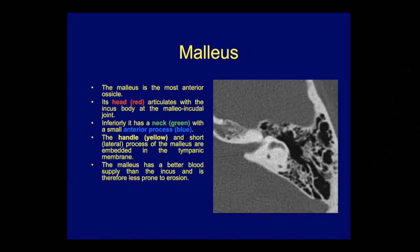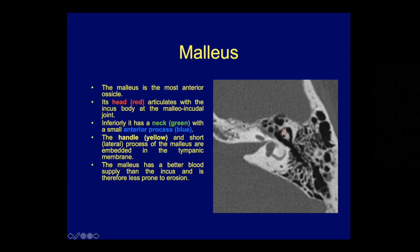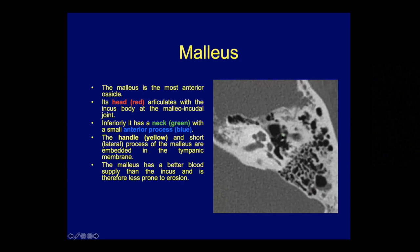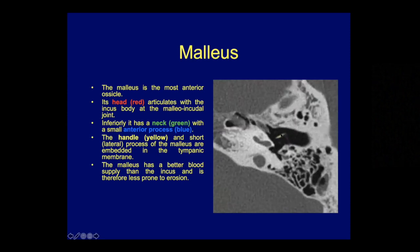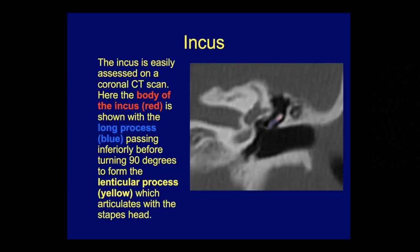Going through the individual ossicles, starting with the malleus: the head of the malleus is marked in red, the neck in green, the lateral process in blue, and the handle in yellow. Starting at the top you can see the head of the malleus, then coming down you get to the neck and lateral process, and then the handle of the malleus. The tympanic membrane will be in contact with the handle, though it's not always clearly visible on these scans.